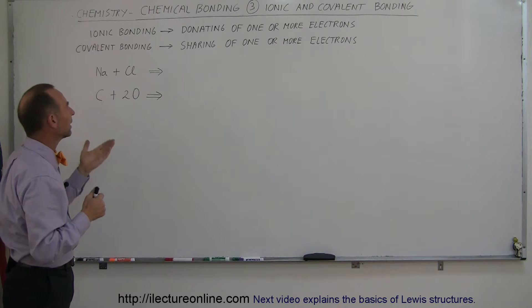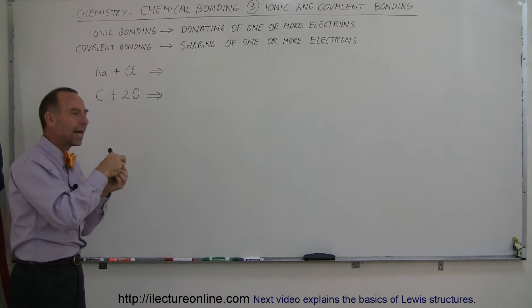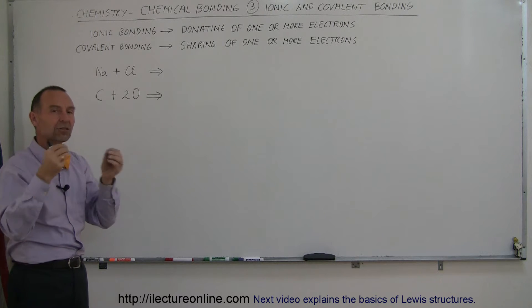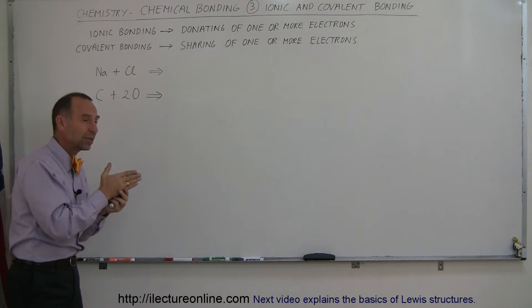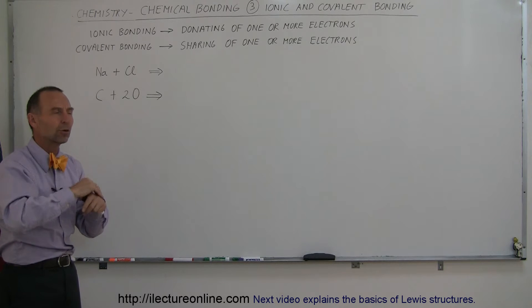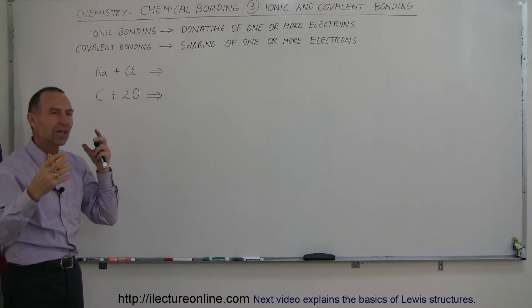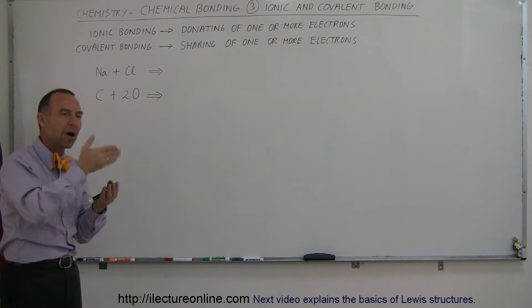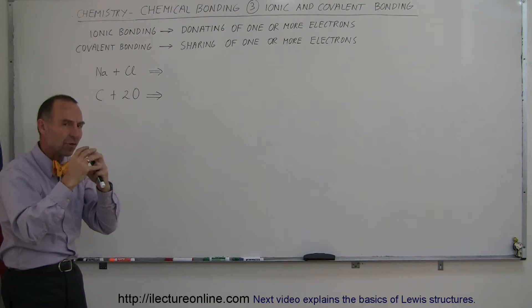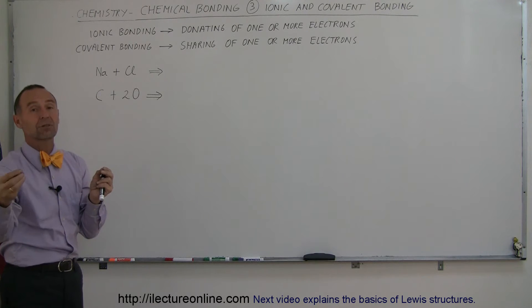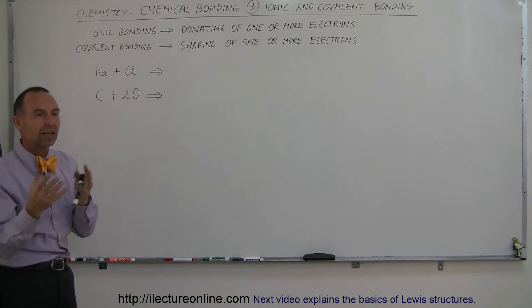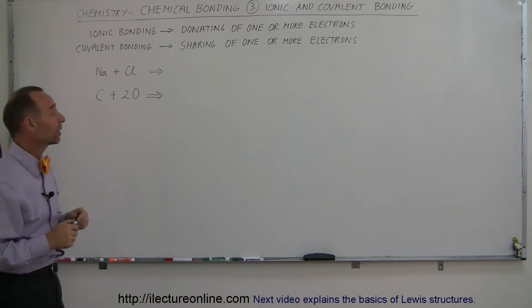When we have covalent bonding, that means they're sharing electrons. One atom is not necessarily giving electrons to another — they're sharing electrons on a temporary basis. One atom will give electrons to the other atom temporarily, and then that atom will give electrons back to the first atom, back and forth. So in a way, there's still this unevenness of electrons, meaning there'll be a positively and negatively charged end to the bonding. There'll still be an electrical attraction, but not because one atom donated an electron to another — they just take temporary custody of the electrons and share them on a temporary basis.